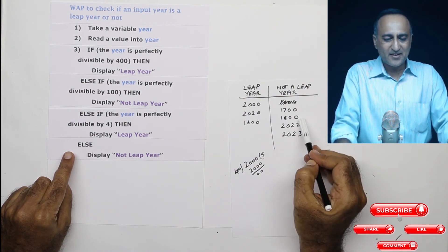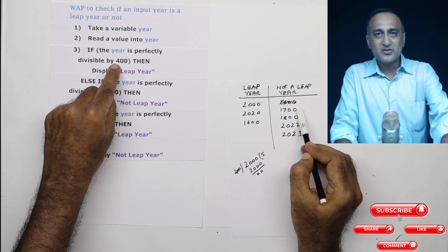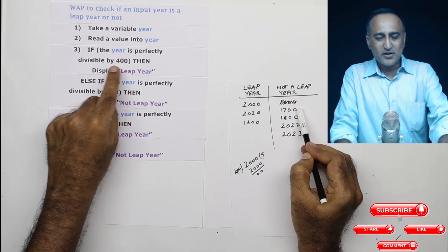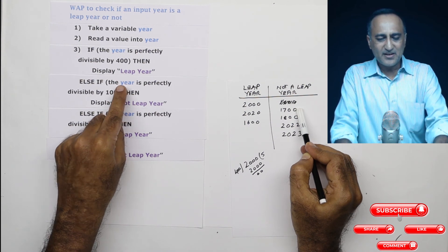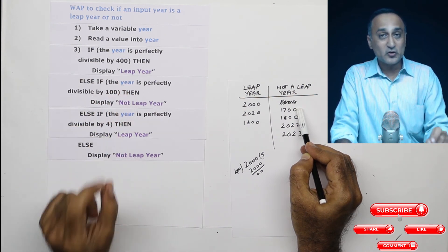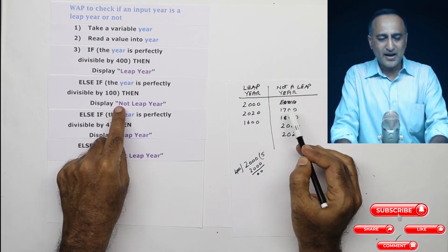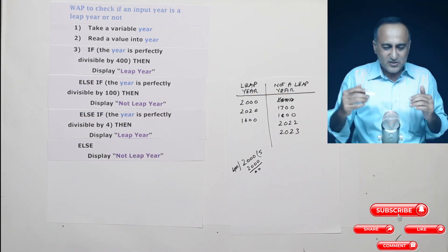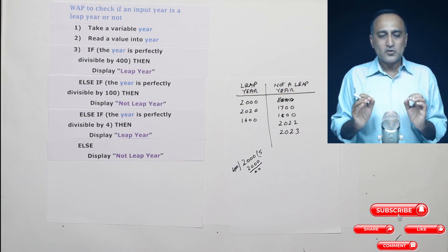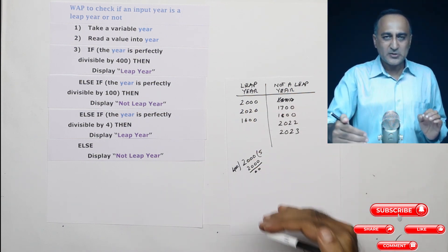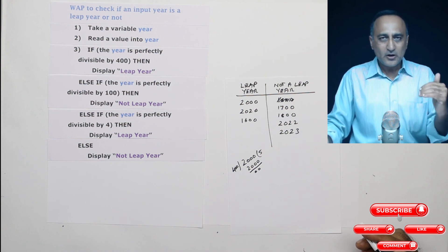Now let's look at 1700. Dividing 1700 by 400 gives remainder 100, so it's not perfectly divisible by 400 — first condition is false. Dividing 1700 by 100 gives remainder 0, so it hits the second condition: any century year that is not a multiple of 400 is not a leap year. I recommend you take different years of your choice and run through this pseudocode logic to verify.